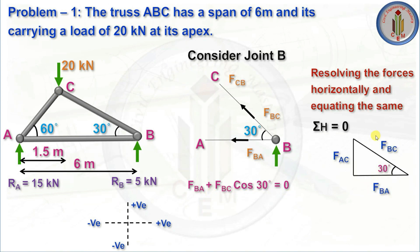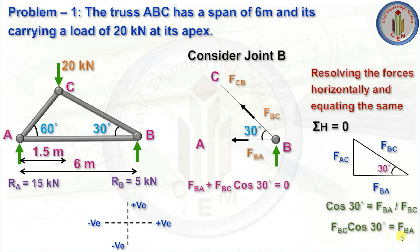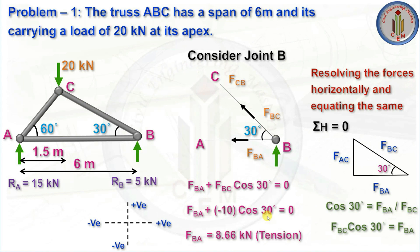Resolving horizontal forces at joint B: FBA + FBC cos30 = 0. Using trigonometry, cos30 = FBA / FBC, so FBC cos30 = FBA. Substituting FBC = −10 kN, we calculate FBA = 8.66 kN. This matches the previously calculated FAB value, confirming that member AB is in tension.